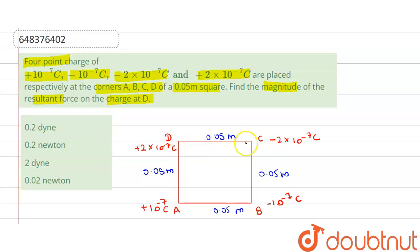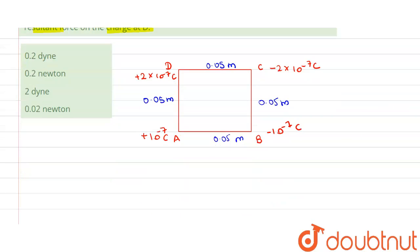So let us consider the four point charges are situated at points A, B, C, D of a square whose side is 0.05 meter. Now the force on A due to D, we are asked to find out force at point D.